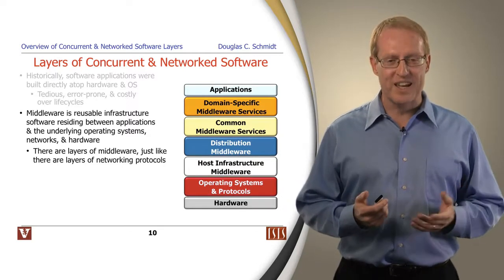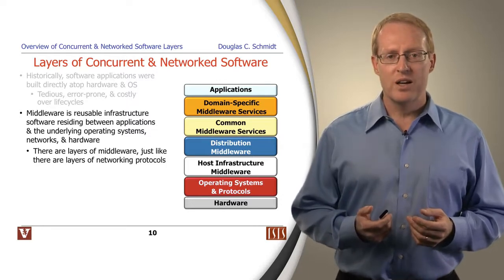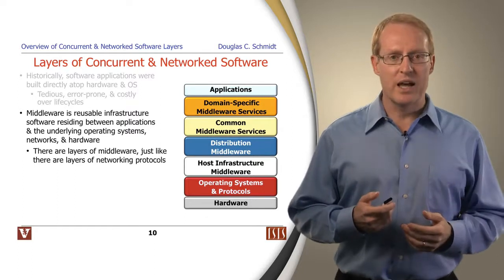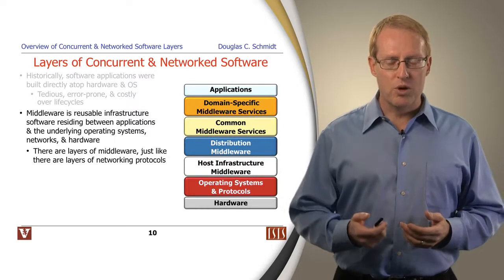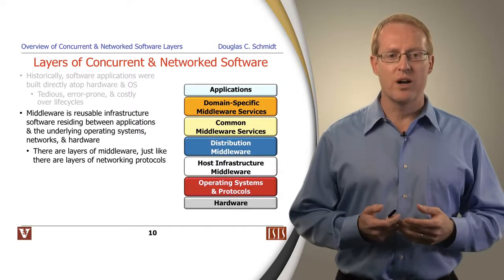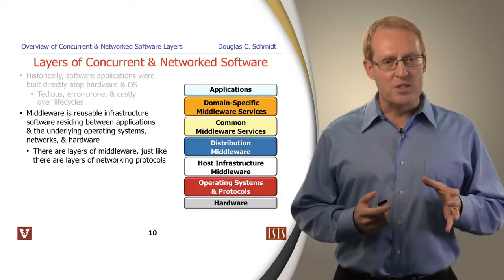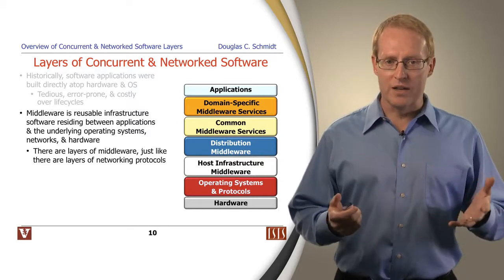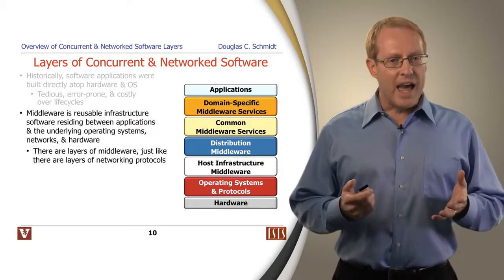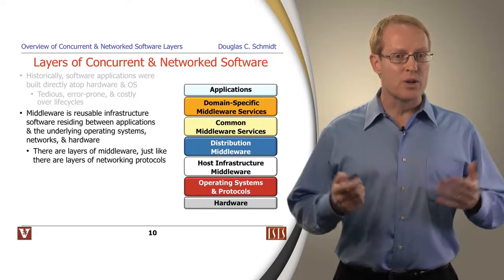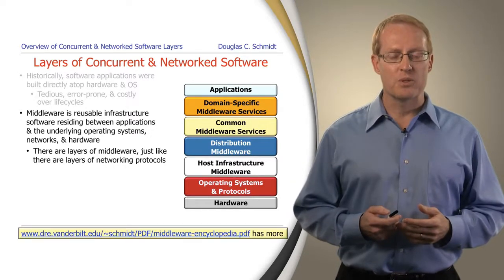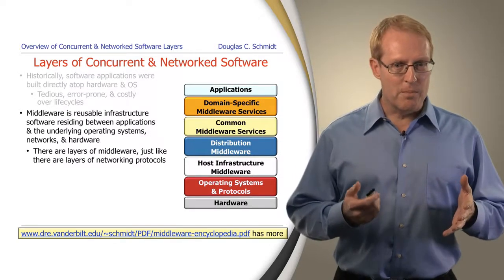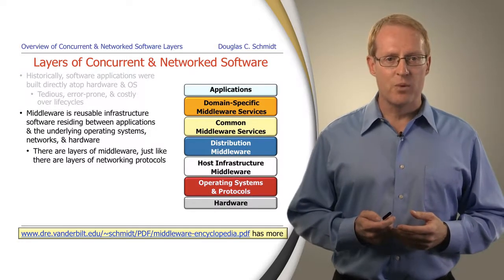Middleware, in this context, is essentially reusable infrastructure software that resides underneath the applications and on top of the underlying operating systems, protocols, hardware, processors, networks, and so on. Its purpose is to basically shield the applications from a lot of the accidental and inherent complexities of the lower-level mechanisms. As with network protocols, there are layers of middleware, and we're going to talk about some of those layers in just a moment. You can take a look at this paper for more of an overview of the background and some of the key concepts involved with middleware.